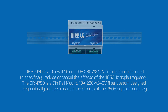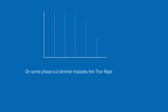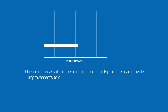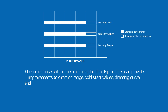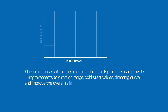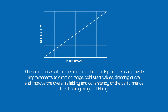On some phase cut dimmer modules, the THOR ripple filter can provide improvements to dimming range, cold start values, and dimming curve, and can improve the overall reliability and consistency of the performance of the dimming on your LED lights.